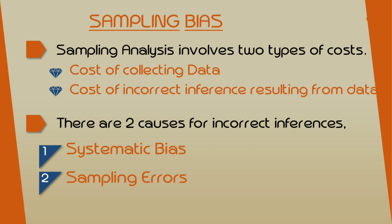What is the cost of incorrect inference? If you want to identify the same thing by sampling design or sampling process, you can see the cost of incorrect inferences. The two incorrect inferences are: one is systematic bias, and two is sampling error. We will discuss this in this course.